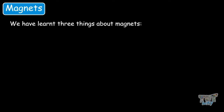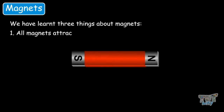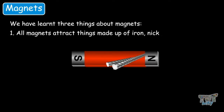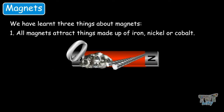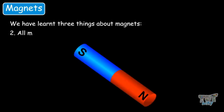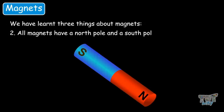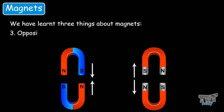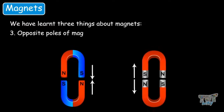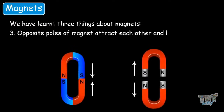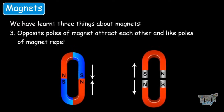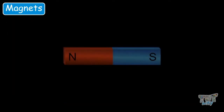So we have learned three things about magnets. First, all magnets attract things made up of iron, nickel and cobalt. Second, all magnets have a north pole and a south pole. Third, opposite poles of magnets attract each other and like poles of magnets repel each other.